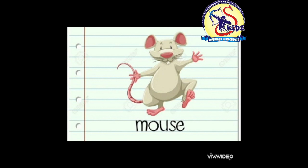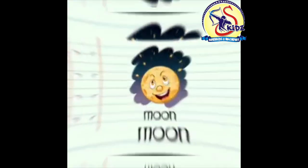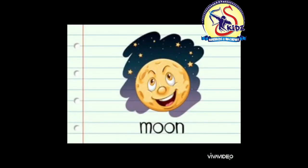It is a mouse. See the next picture. It is a mouth. M, mouth. Repeat, mouth. Next picture is of a moon. M, moon. Repeat, moon.